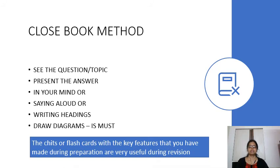So this is the closed book method: You think of a question, say shoulder joint, close your eyes, close the book, and say the answer—what am I going to include in my answer, either in your mind or aloud, or write the subheadings, whichever suits you.